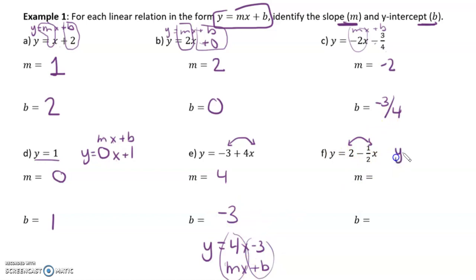Okay, same thing for this one. I'll write it to the side. This would be negative 1 over 2x plus 2. So, the m is negative 1 half and the b is 2.